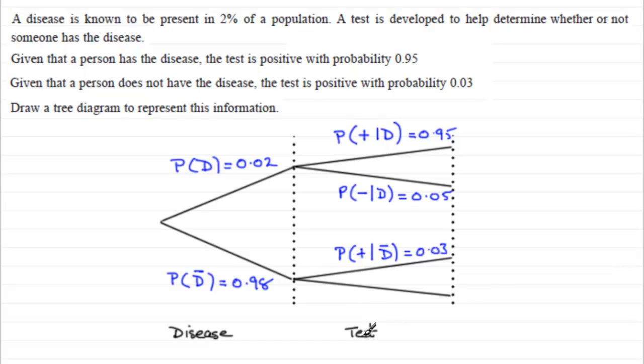And so we can fill in this next branch then, the probability that a person tests negative given that they do not have the disease, well that's got to be 1 minus 0.03, and so that gives us 0.97.